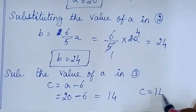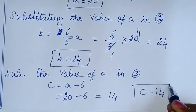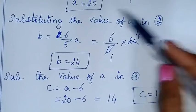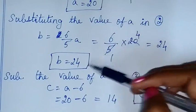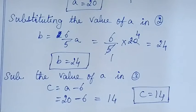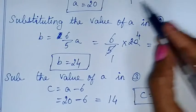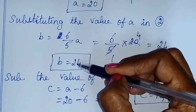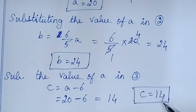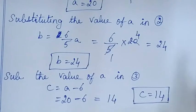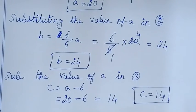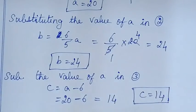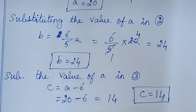Now A equals 20, B equals 24, and C equals 20 minus 6 equals 14. Let's verify: 20 plus 24 is 44, and 44 plus 14 is 58. The answer is correct. That's all — thanks for watching, children.